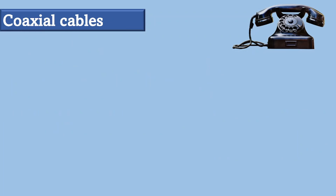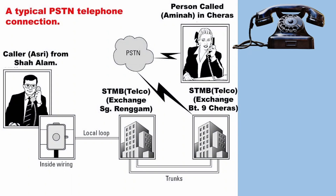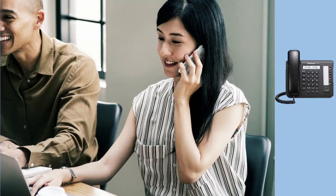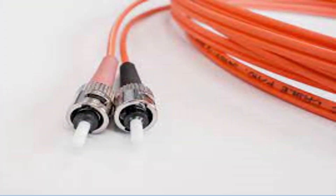Now let's talk about the applications. Coaxial cable was widely used in analog telephone networks where a single coaxial network could carry 10,000 or more signals. Later, it was used in digital telephone networks where a single coaxial cable could carry digital data up to 600 megabits per second. However, coaxial cable in telephone networks has largely been replaced today with fiber optic cable.